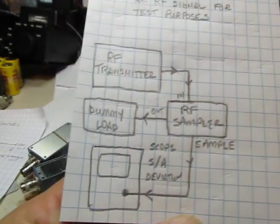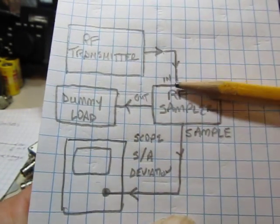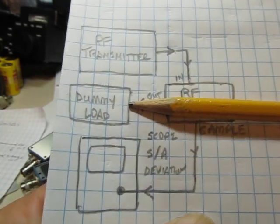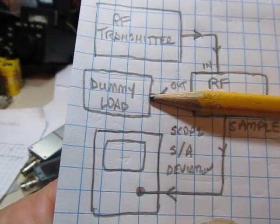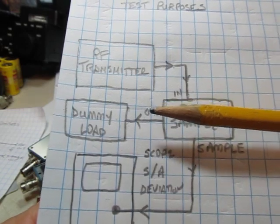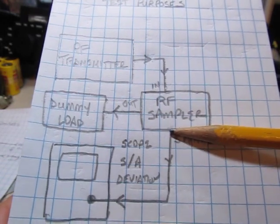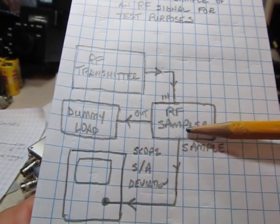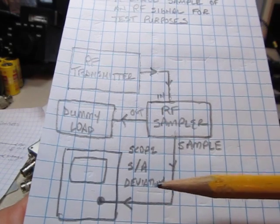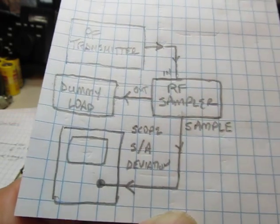We're going to use the sampler to pick off a small sample of that signal. Here's a quick schematic example. The RF transmitter comes in, the sampler allows the bulk of the energy to simply pass through and go out to a dummy load — which is just a simple known resistive load for the transmitter to dump its power into without radiating into the air like connecting to an antenna. So it allows you to test the transmitter at full rated power. The sampler then picks off a very small sample — like sticking your ear against the wall — that you can couple into your scope, spectrum analyzer, deviation meter, or whatever instrumentation you're using to characterize that RF transmitter.